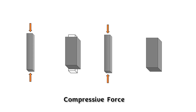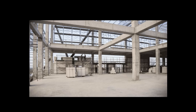Next is compressive force. It is a pushing force. When the force is applied on the member, it tends to compress the member. The original shape of the member gets compressed, and when the pushing force is applied, the cross-sectional area gets increased. Practical examples are columns and walls which support the floor weight.